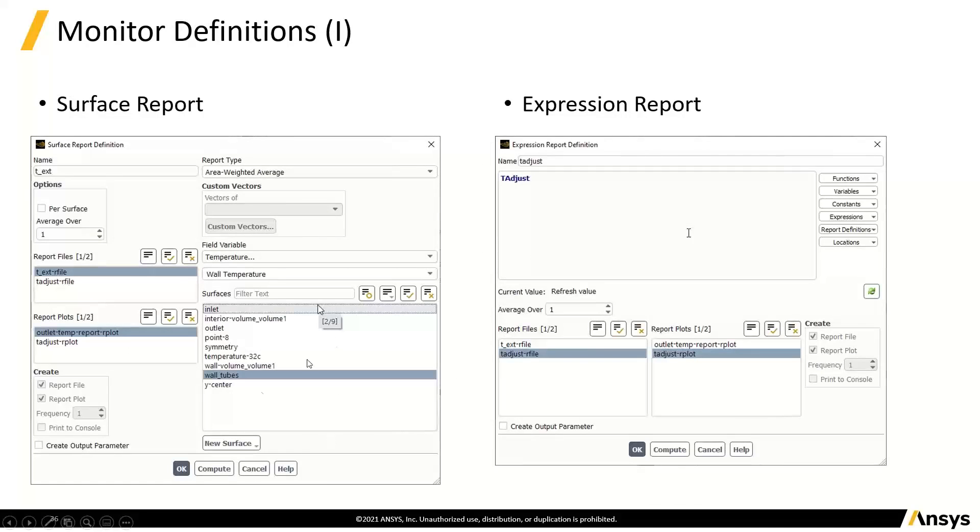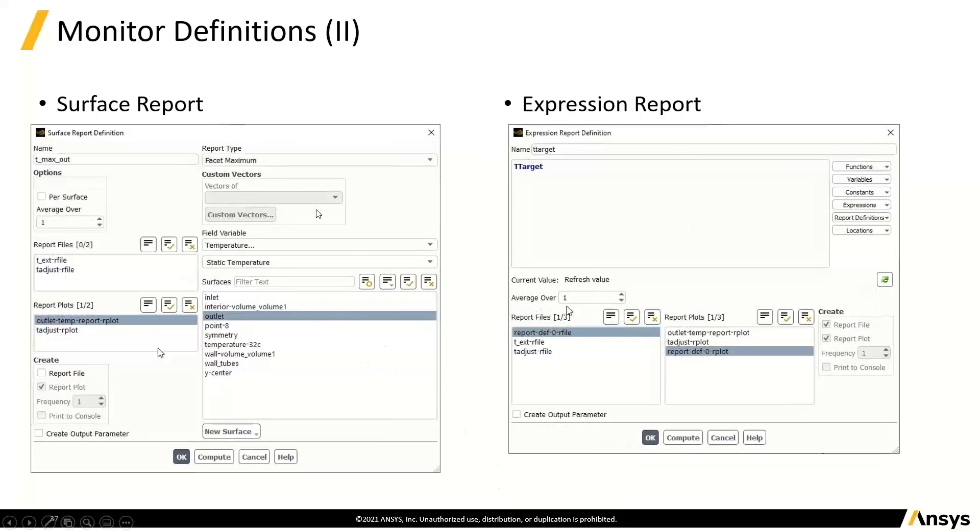We can create a surface report with this and we can have a look at an expression report where T adjust is going to be plotted. So this is just a standard one we're going to create without using expression. Here, we're going to create one using an expression just to be different. So now we're setting those up to go into files, etc., the data.